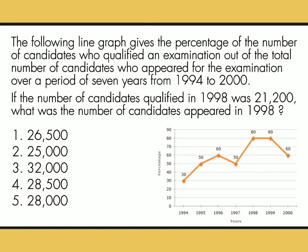If the number of candidates qualified in 1998 was 21,200, what was the number of candidates appeared in 1998? 1) 26,500, 2) 25,000, 3) 32,000, 4) 28,500, or 5) 28,000?